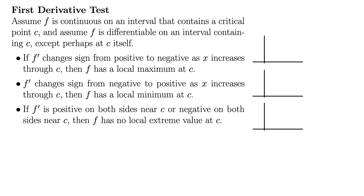It says: assume f is continuous on an interval that contains a critical point c, and assume f is differentiable on an interval containing c, except perhaps at c itself. That's all the conditions — that's the setup. The first part says if f prime changes sign from positive to negative as x increases through c, then f has a local maximum at c. So this tells us that at some point c, if f goes from increasing to decreasing, then we have a local max at that point. When you draw it out, of course — it's very intuitive when you use a picture.